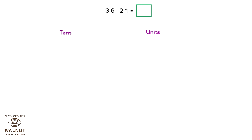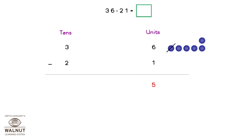Let's look at this problem: 36 minus 21. We split both numbers into tens and units. So for 36, we have three tens and six units. For 21, we have two tens and one unit. We subtract the units and then we subtract the tens. The number that we have is one ten and five units, which is 15. That is the answer. So 36 minus 21 is equal to 15.